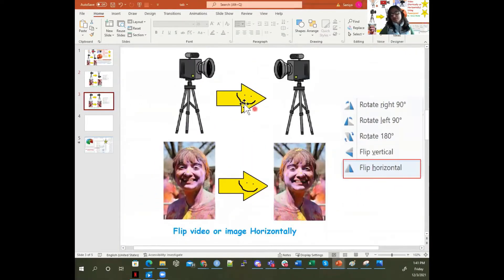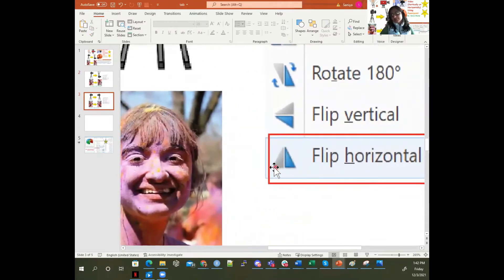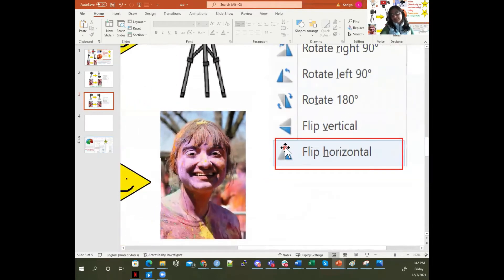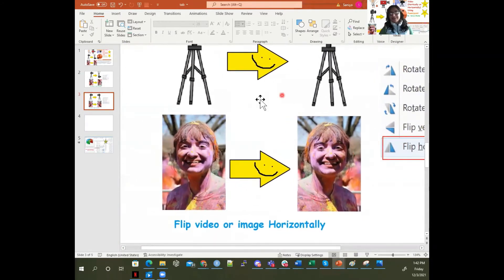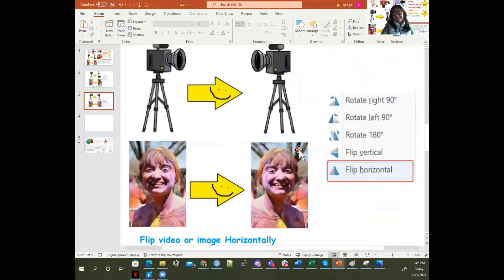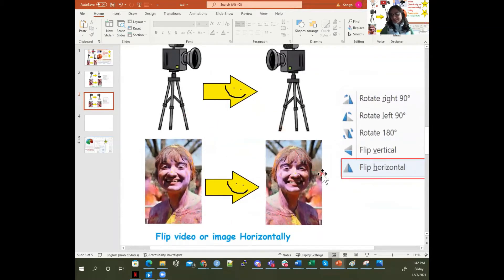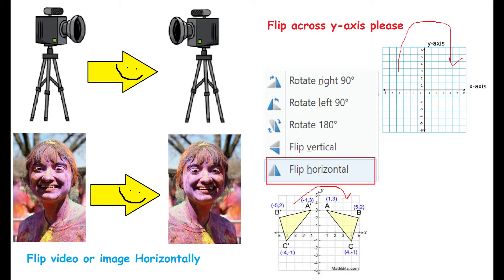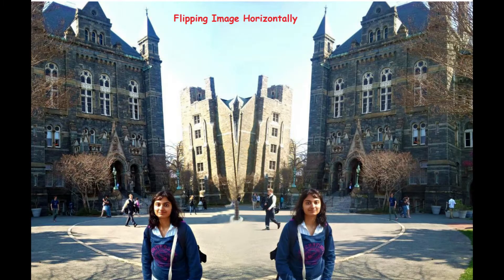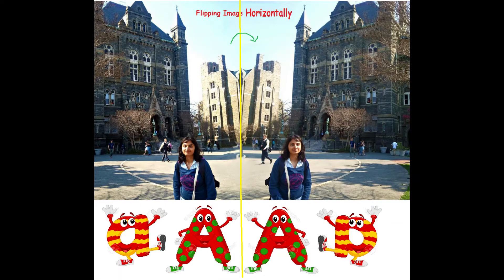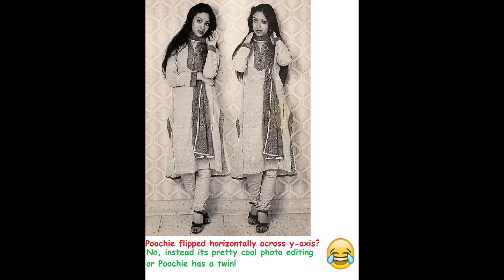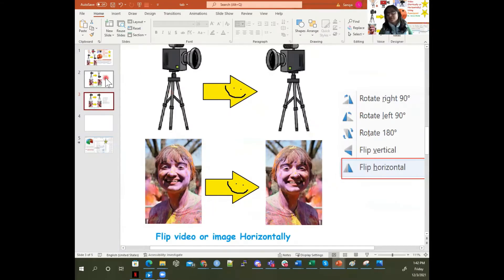If you're flipping it horizontally, that means you're flipping it around the y-axis. So if this gray image is what you have, flipping it horizontally means you're just flipping it across to the other side. Going from this to this — and again, this is an image of me playing many years ago, so I look really grateful and messy — you can see how the colors look and how the image is flipped across. That's what a horizontal flip is, and that's what a vertical flip is.